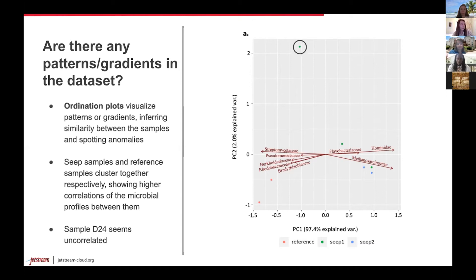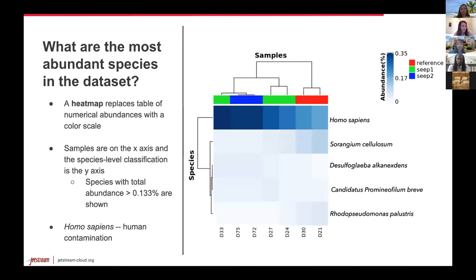The last method to visualize the taxonomic differences across the samples is a heat map. A heat map is a table of numerical values with a color scale. The heat map shows that Homo sapiens is most abundant across the samples, which confirms that there is some sort of human contamination in the data set.